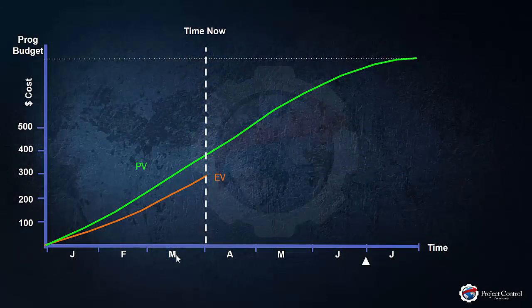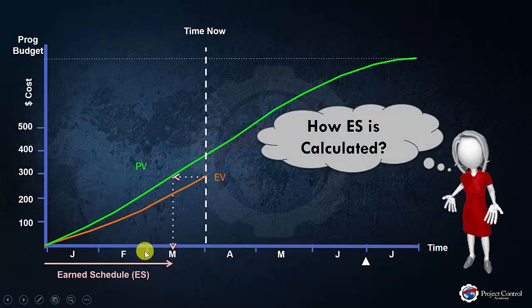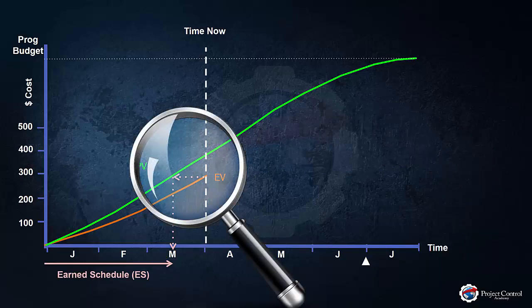When the Earned Schedule falls in between two periods, just like this example, Earned Schedule would be calculated by counting the number of Planned Value periods completed — in our case, two months — and then adding the Earned Fraction of the incomplete period. We want to know how much that fraction of time is so that we can calculate Earned Schedule. Let's zoom in on the incomplete period to determine how we can calculate that fraction of time.